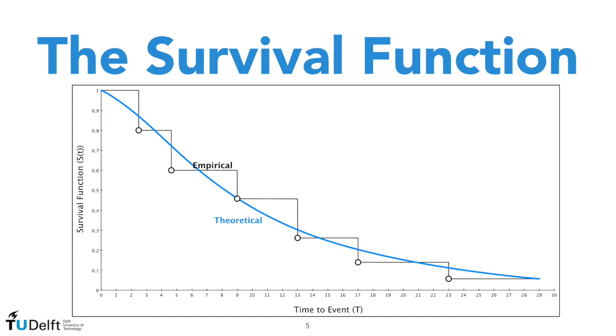One is an empirical one, in particular the one that we can obtain using an estimator we will see together, the Kaplan-Meier estimator, and the other one, the continuous blue line, can be a theoretical one. This is, for example, what we can obtain when we use parametric or semi-parametric approaches.